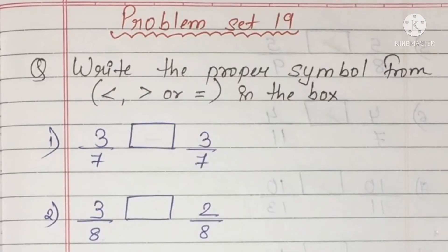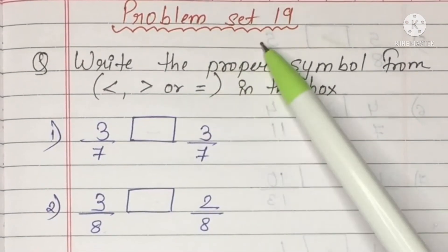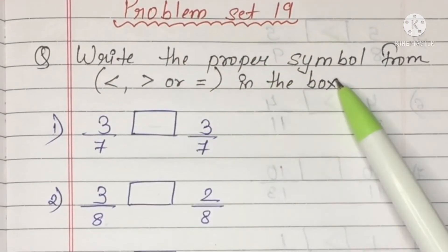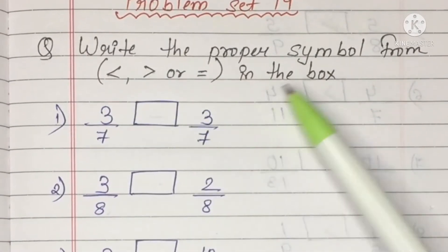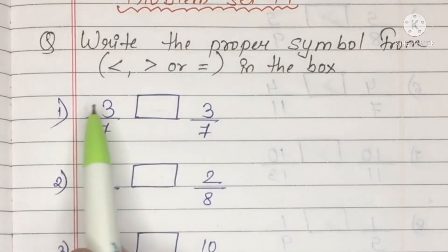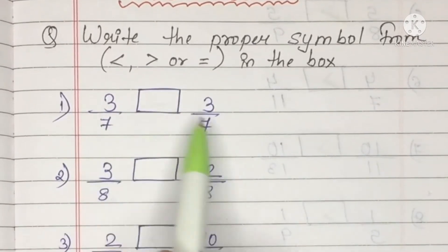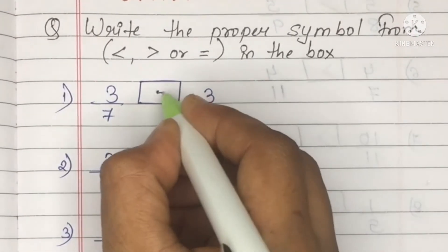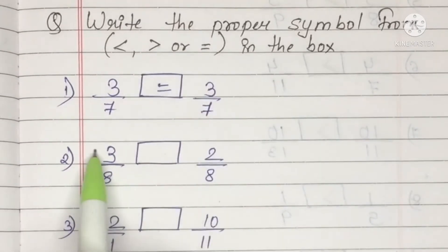Hello everyone, welcome to Learning with Sujata. Today we will start with Problem Set number 19, where we will write the proper symbol — greater than, smaller than, or equal to — in the boxes. First question is 3 upon 7 and 3 upon 7. Both numerator and denominator are the same, so we will put the equal to sign.